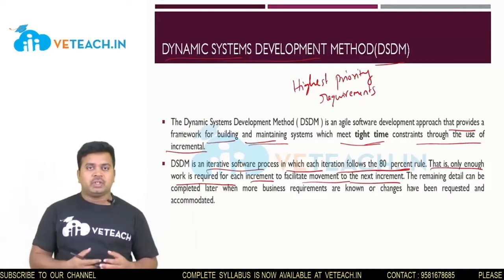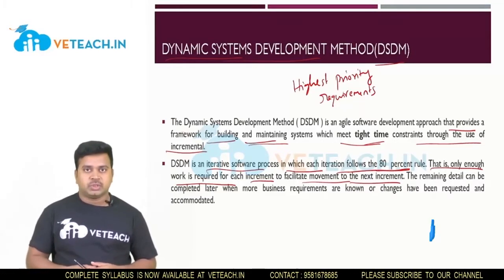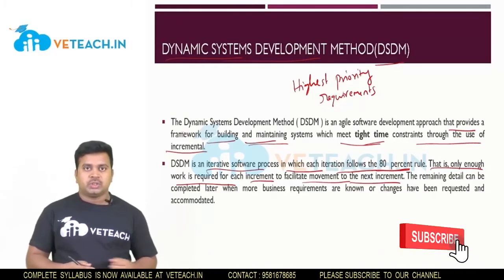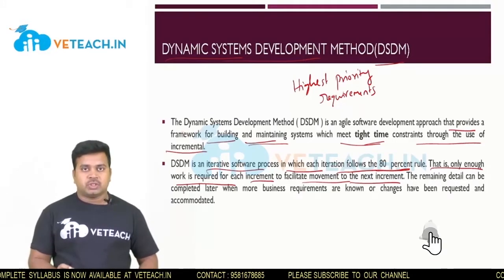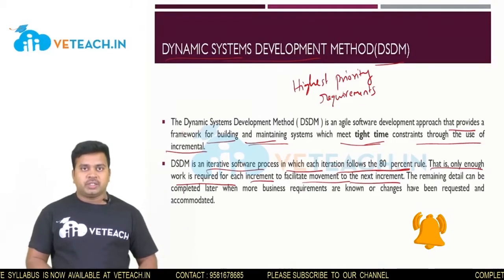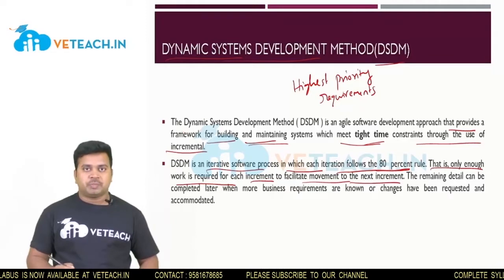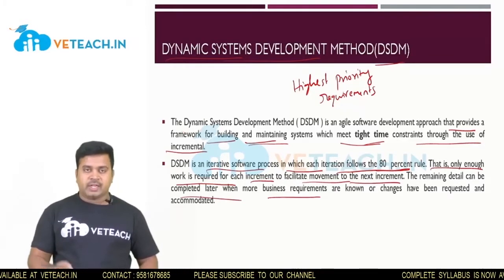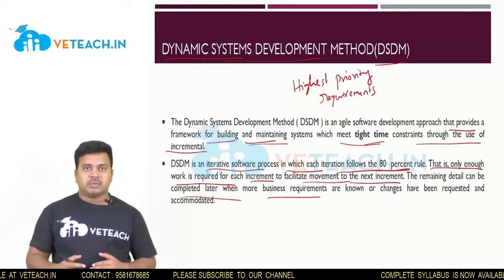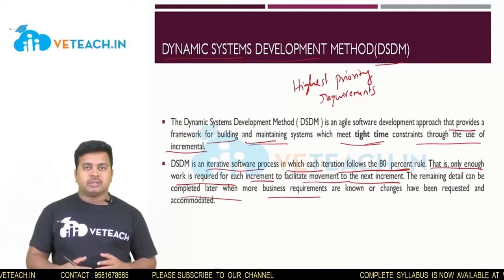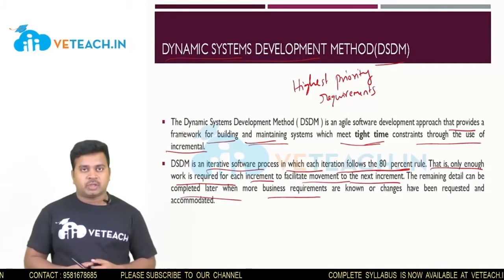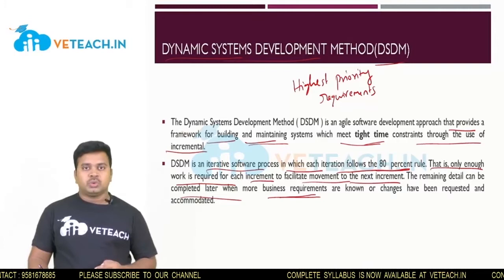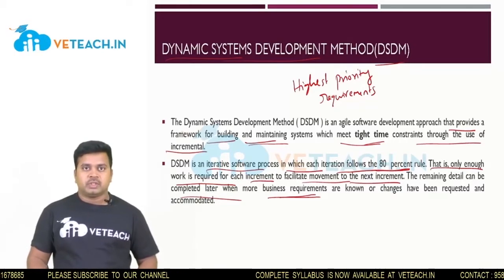If the customer is not happy, they provide more suggestions, which have to be developed in the project. So 80% of the requirements will be completed, and the remaining 20% will be completed later, or when some new business requirements are added. If no changes are needed at that point, you go ahead and do the remaining 20% work.